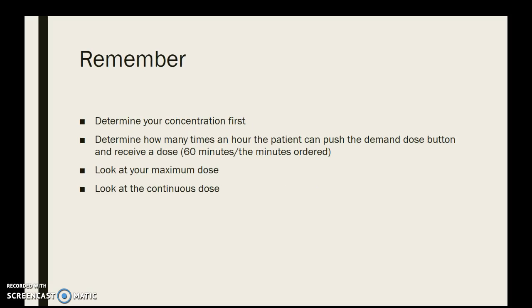As a reminder, PCA is a little harder but doable with four steps. First, determine your concentration. Next, look at how many times an hour the patient can push the demand button and receive a dose — take 60 and divide by your lockout minutes. Then look at your maximum, look at your continuous, and determine what they're asking you to solve for. If you do these four steps, you're going to be fine. Thanks and good luck.